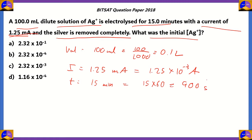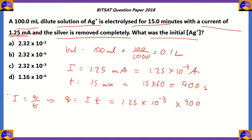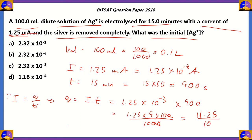Now we know the volume, current, and time period in standard units. Since I = Q/T, charge Q = I×T = 1.25×10⁻³ × 900. That gives 1.25×9×100 divided by 1000, the two zeros cancel, so 1.25×9 = 11.25 divided by 10, giving charge Q = 1.125 coulombs.